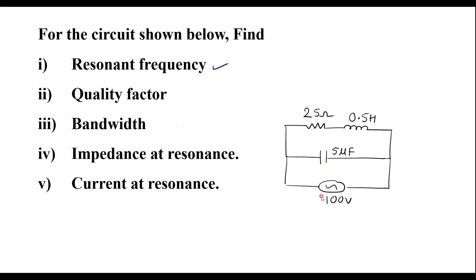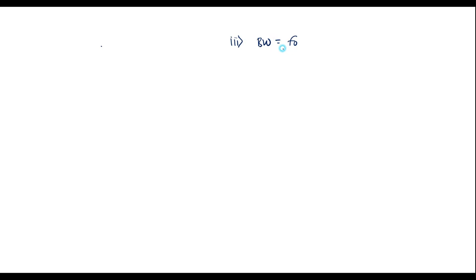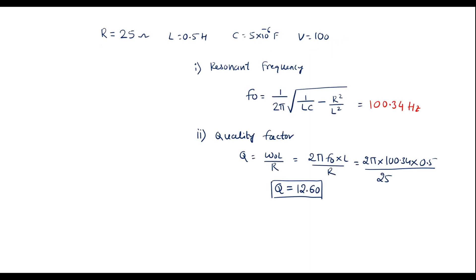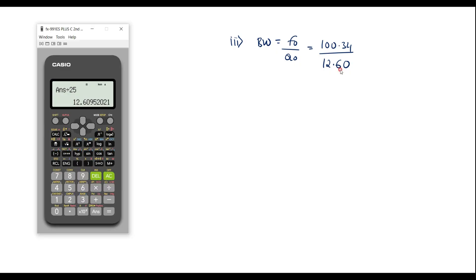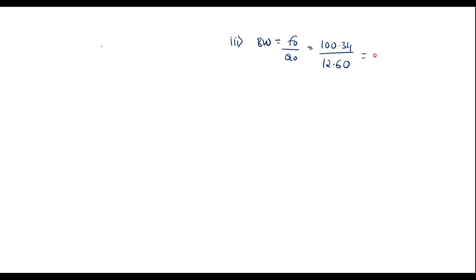Now let me calculate the bandwidth. Bandwidth is given by the formula: BW = F₀ / Q₀. F₀ is already calculated as 100.34, divided by Q₀ which is 12.60. That gives 100.34 / 12.60, which equals 7.96 Hz.